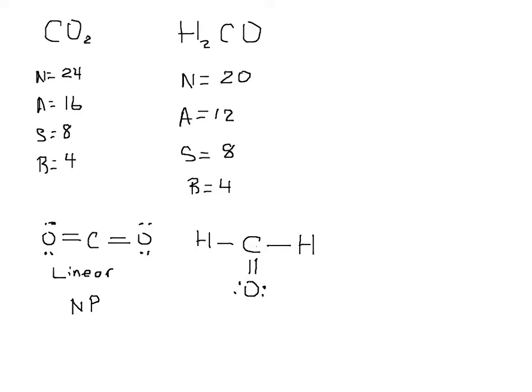We see that we have three bonded groups, so that makes it trigonal planar. No lone pairs are on the carbon — trigonal planar. Looking at the groups around the central atom, two are the same and one is different. Since we have different groups, this would be polar.